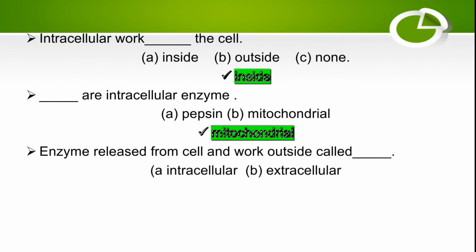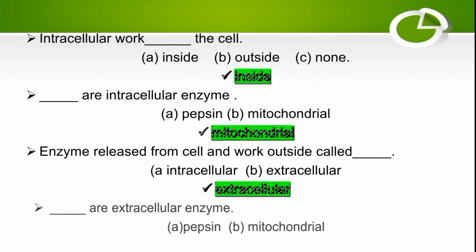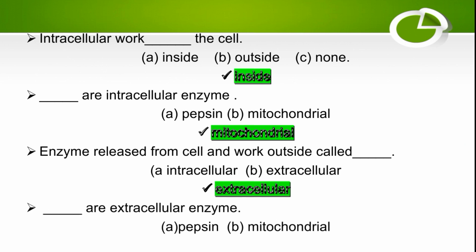Enzymes released from cells that work outside are called extracellular — the right option is extracellular. Pepsin is an extracellular enzyme, while mitochondrial enzymes are intracellular. The right option for an example of an extracellular enzyme is pepsin.